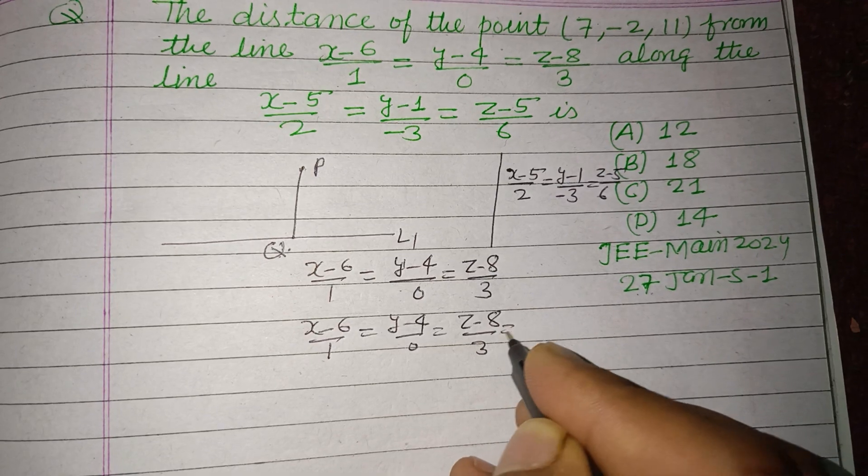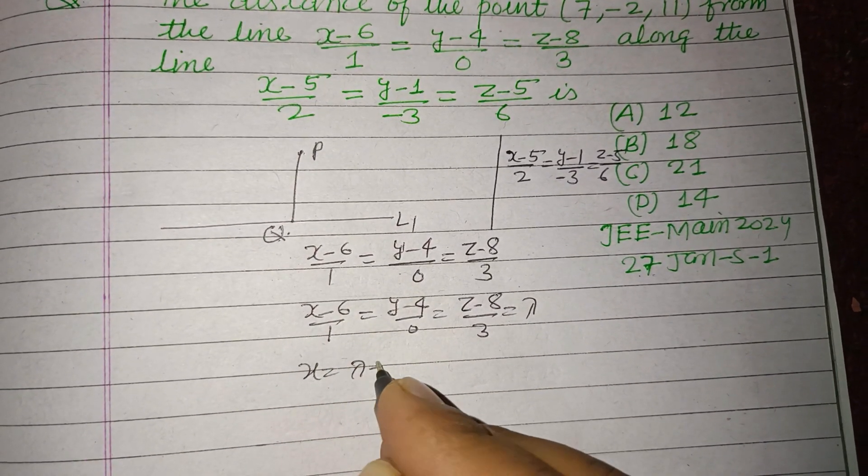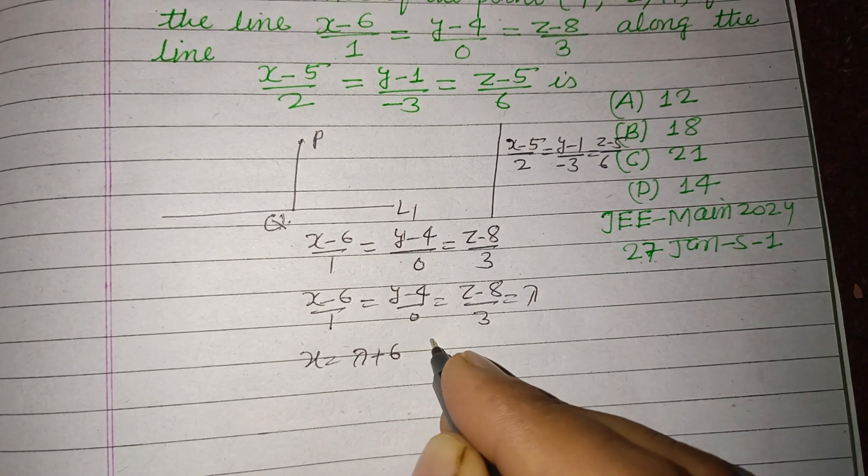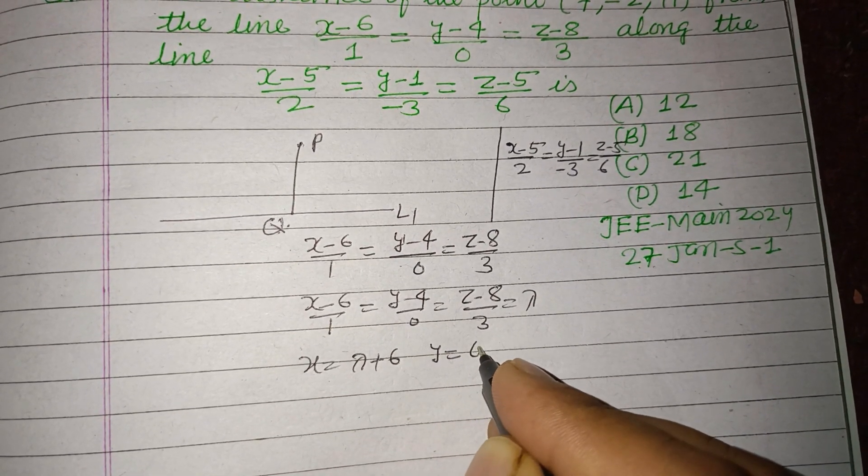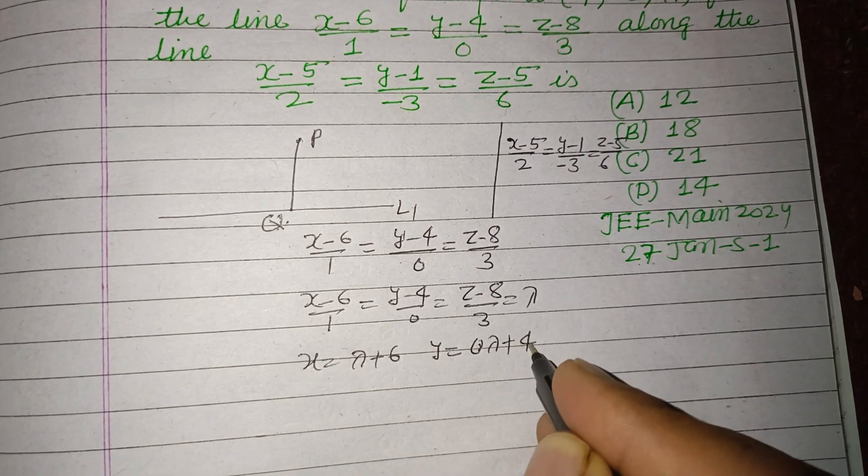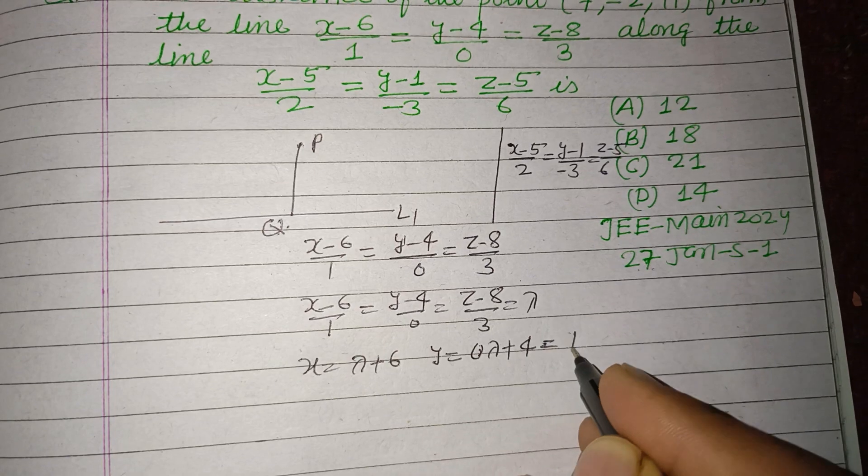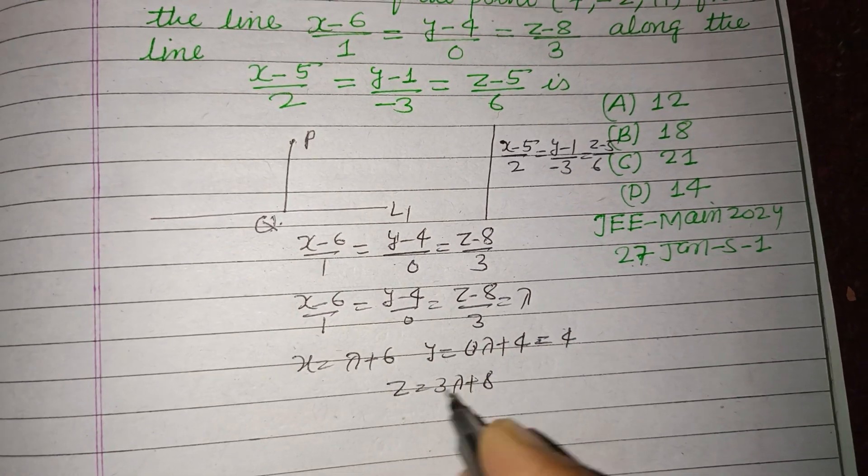0 times λ plus 4, which means it is 4, and z = 3λ + 8. So